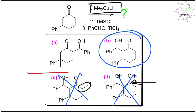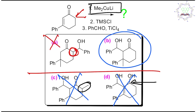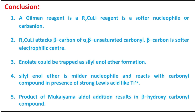Now between options A and B: in option A, the enolate carbon position is wrong — not possible. So option B remains. This process of elimination leaves one answer. However, I always recommend: read the basic chemistry properly first, don't follow tricks at the beginning — learn the fundamentals, practice, and then use tricks for better ranks.